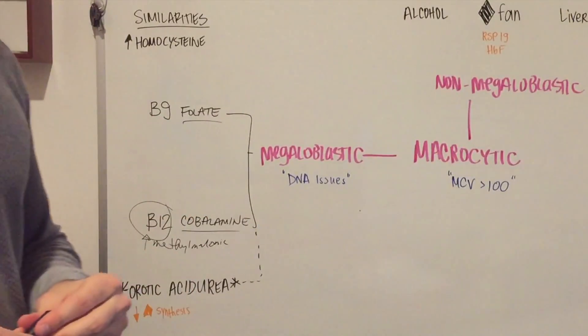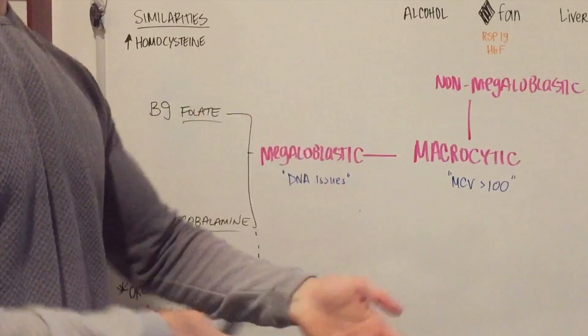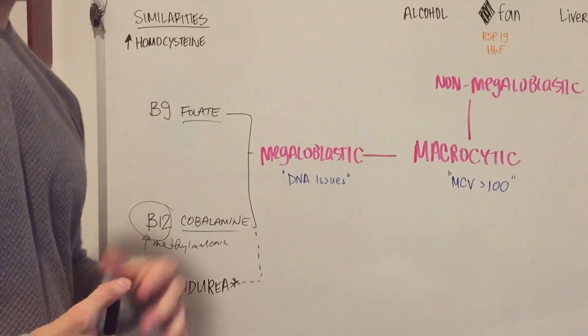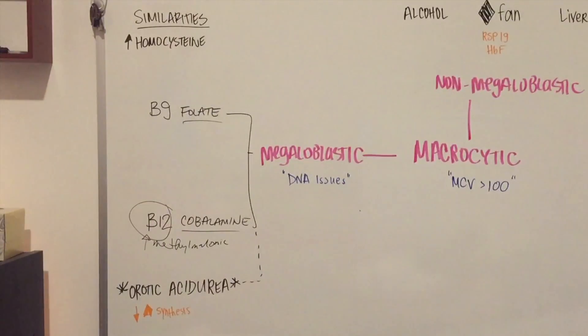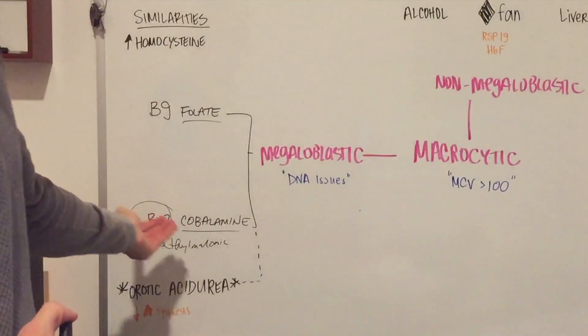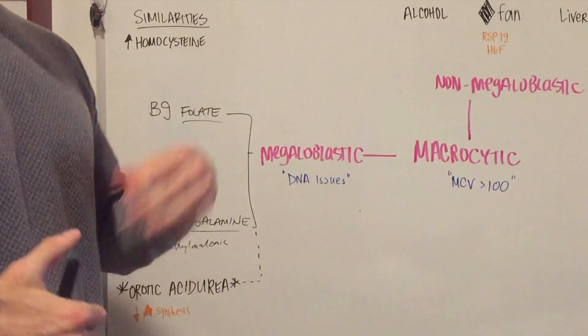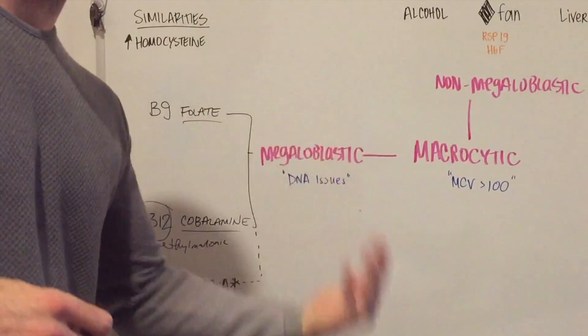One of the issues that is commonly tested in elderly individuals that are presenting with a normal diet would be pernicious anemia. And pernicious anemia means that you have a difficulty absorbing B12, and this can be caused due to an autoimmune reaction targeting specific parietal cells within the stomach.